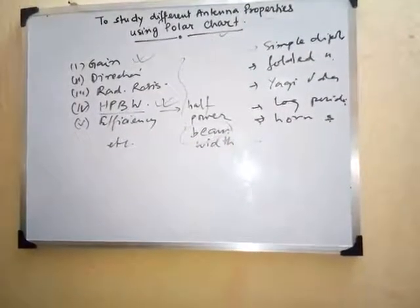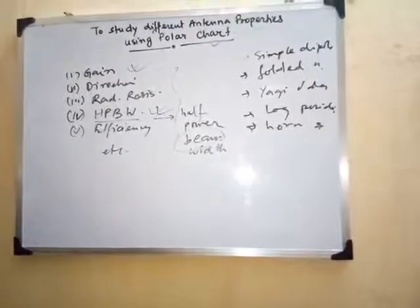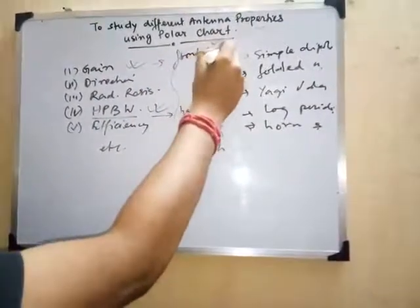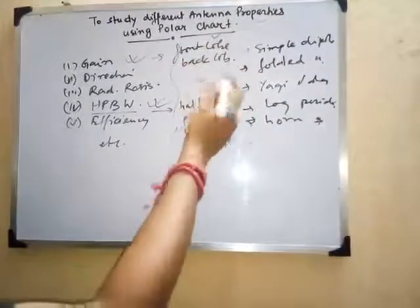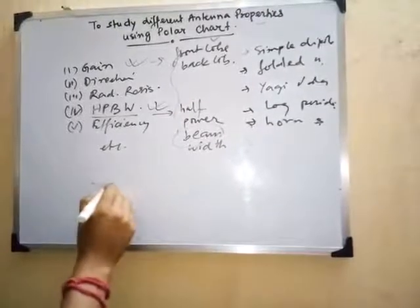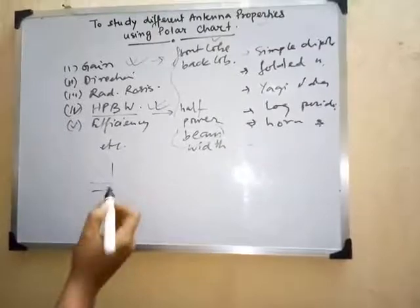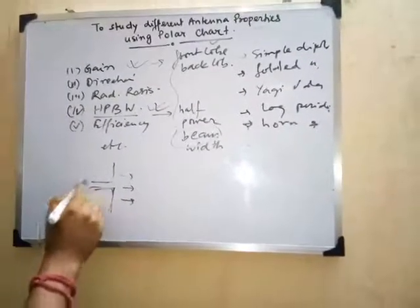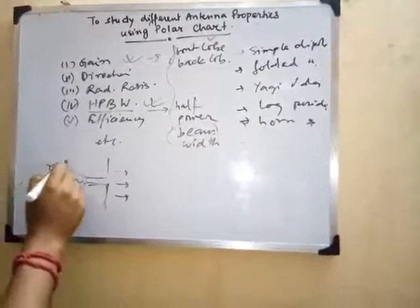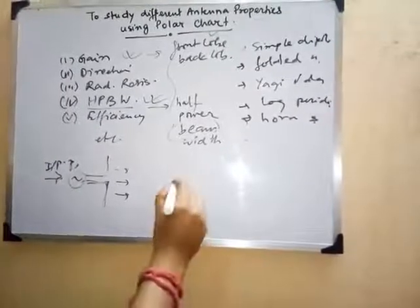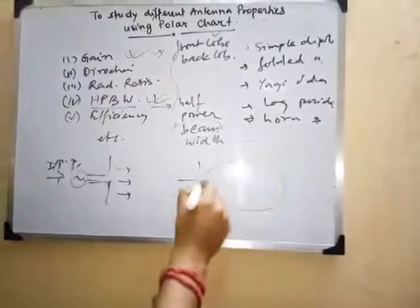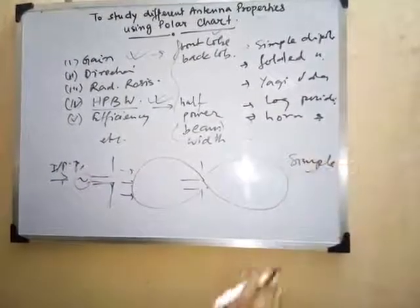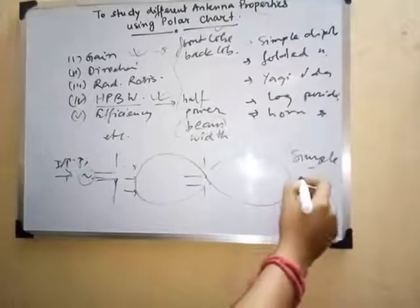The gain will be measured as front lobe gain and back lobe gain. For a simple dipole antenna, the direction of propagation is always perpendicular to the plane of the antenna. Power is fed at the input port and radiated into space. The radiation pattern of a dipole antenna has a front lobe and a back lobe, and is commonly known as a figure-of-eight.